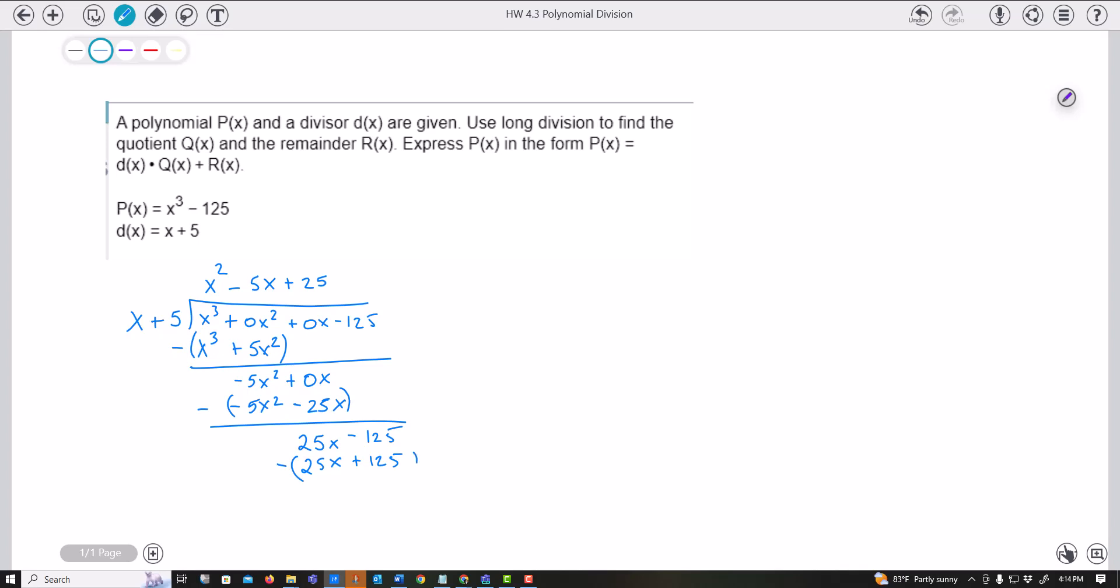Remember, you're subtracting. So that cancels. This actually becomes negative 125. So it becomes negative 250 for our remainder. I'll write the answer here in a second. So this is the long division way.